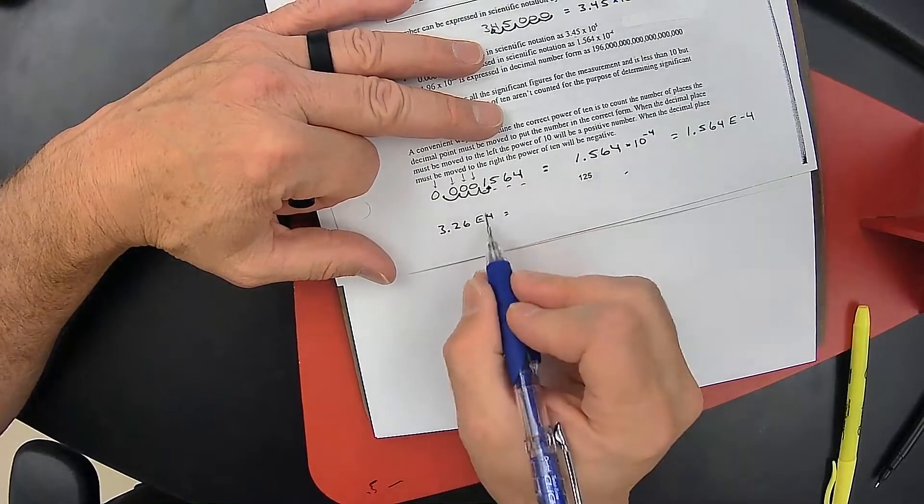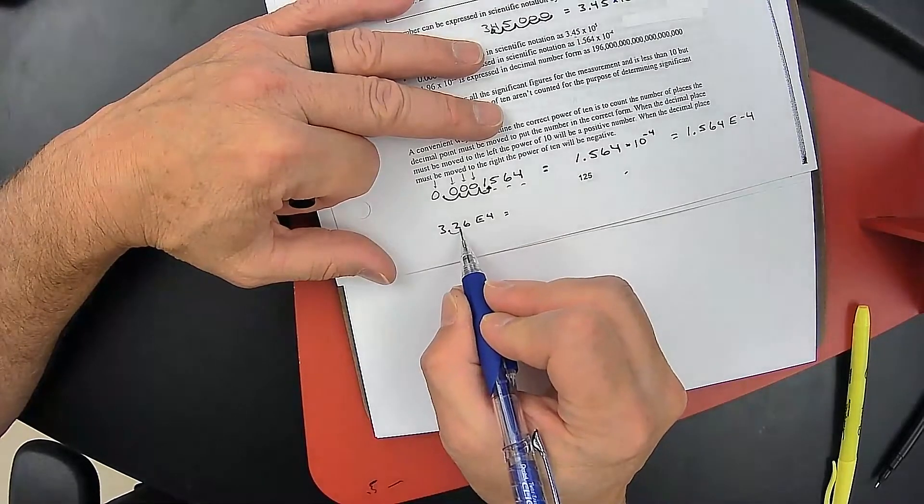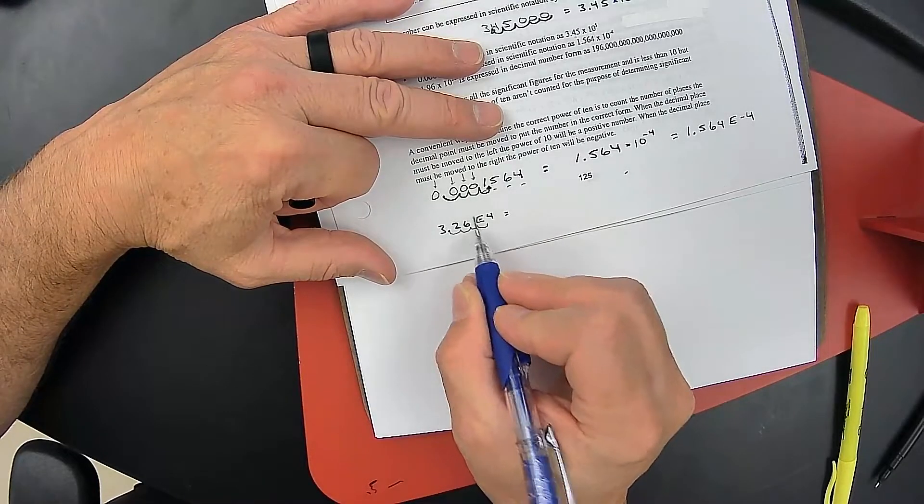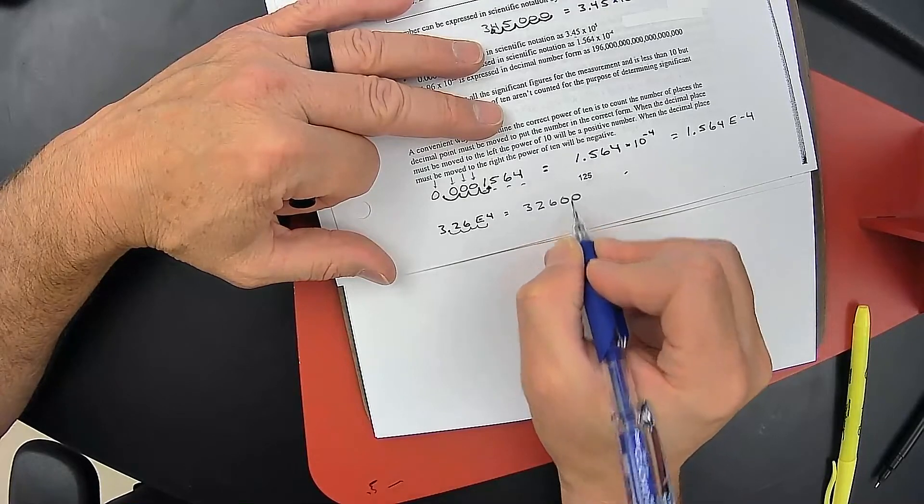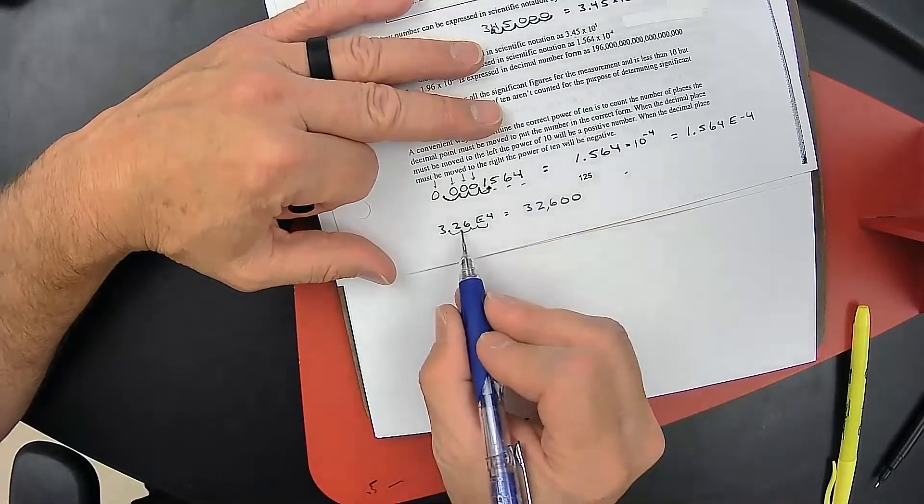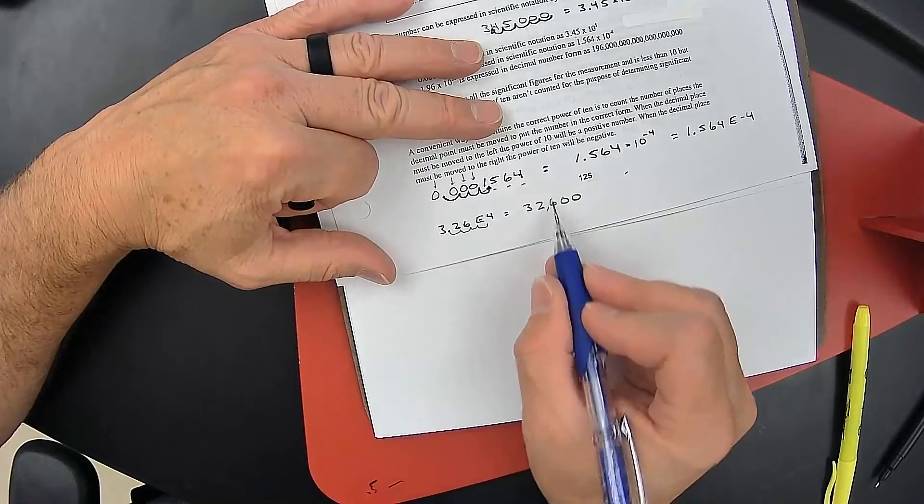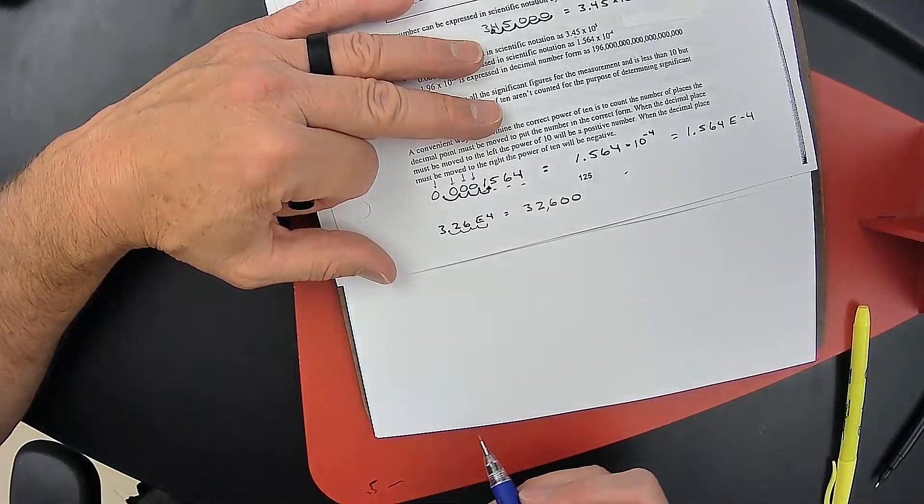That means we need to move the decimal place four places. One, two, three, four. That means I'm going to need to add two zeros to the end. And so 3.26 E to the fourth is the same thing as 32,600.